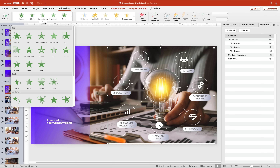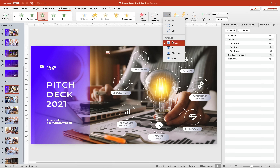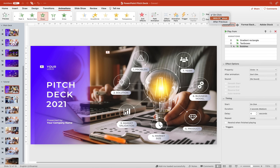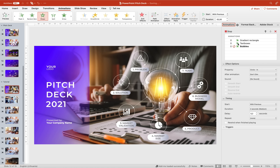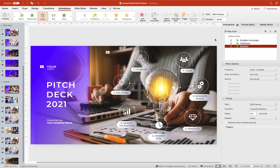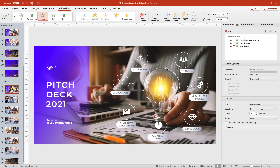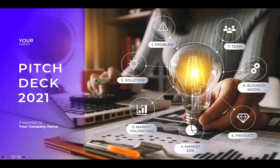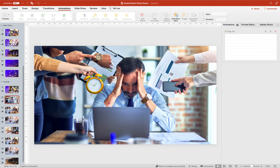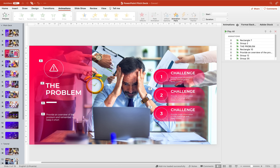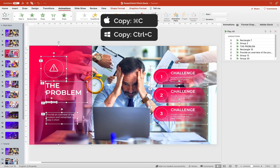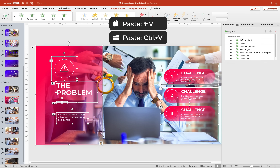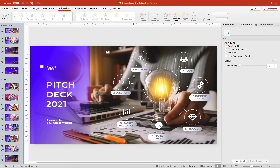Let's go to Animations and add an entrance animation called Zoom. In Effect Options we can change the shape to Circle. Let's make sure the animation starts With Previous. Let's check it out — it zooms in, so let's go back to Effect Options and choose Out, so it zooms out — that looks perfect. Let's check it on full screen: we have the rectangle on the left and the zooming circles with icons in the center around the light bulb. The next step is to add the other slides of the pitch deck. To save time I'll copy the content I previously created, excluding the background photos since we already have those, and paste it into the pitch deck slides.